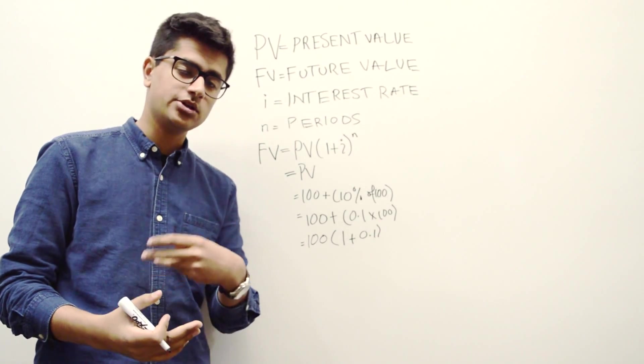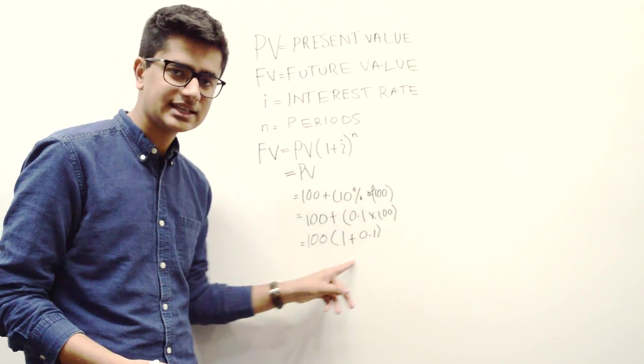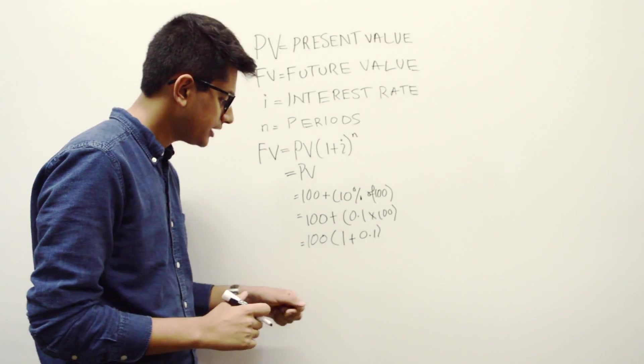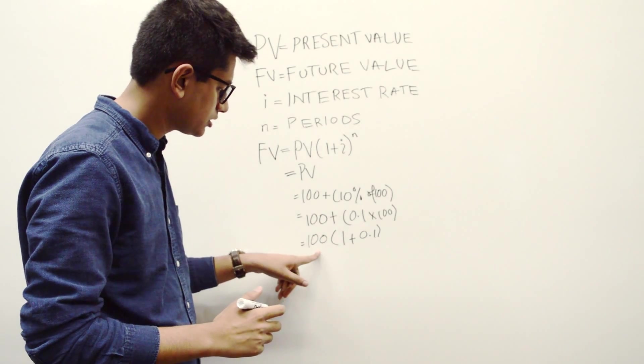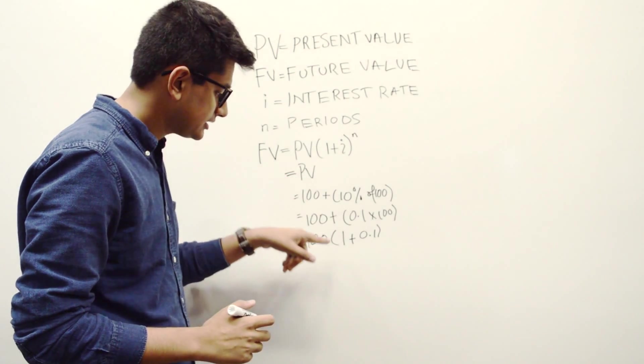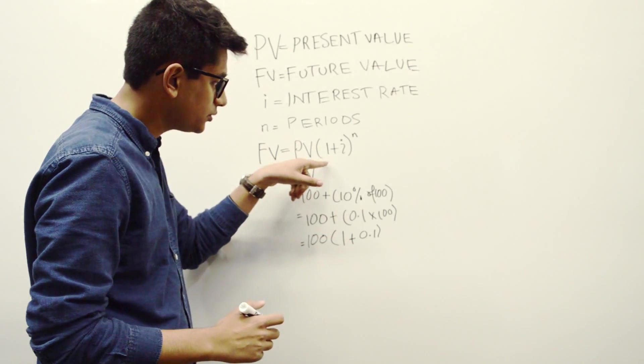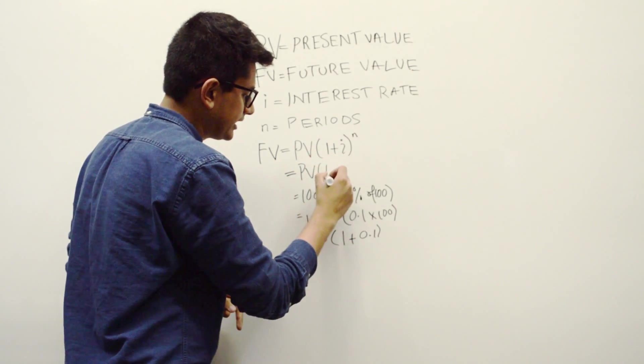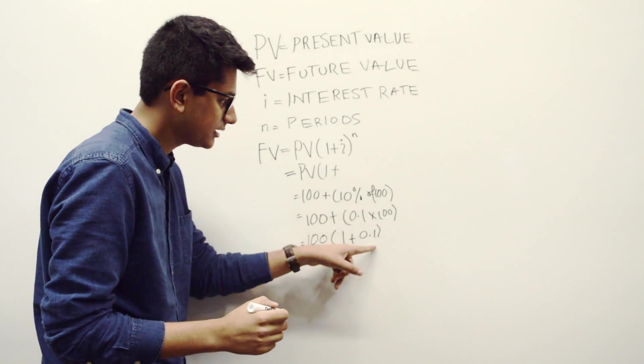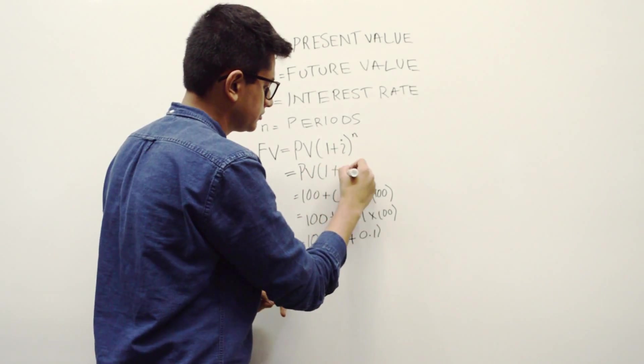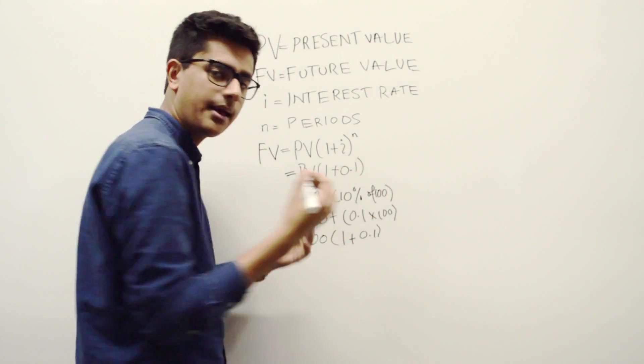At this point, if you're confused, I would urge you to pause the video and assess this to make sure that you really do understand the concept being applied here. So now, you have $100, which is your present value, times 1 plus 0.1. Over here, we have 1 plus I, so that essentially means that I, which was 10%, is over here. Makes sense.